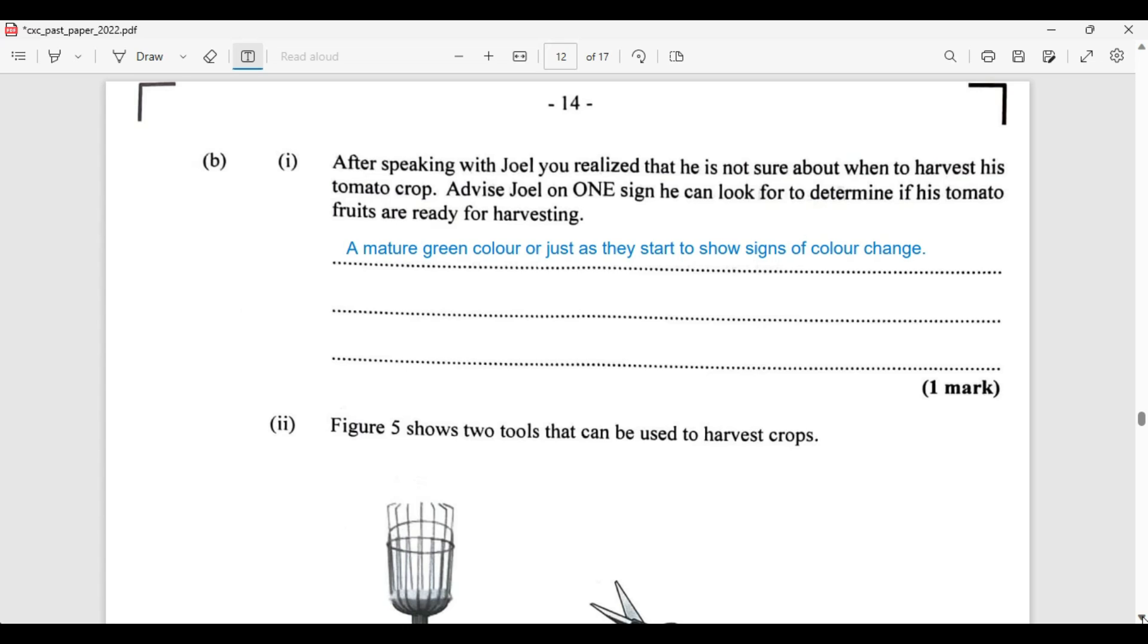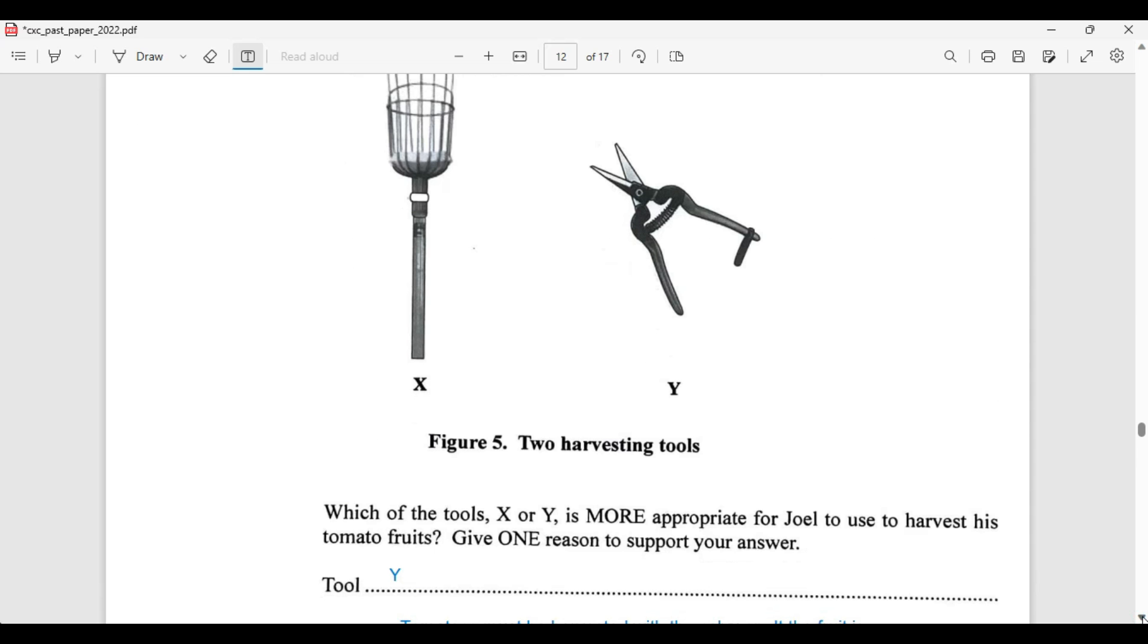Figure 5 shows two tools that can be used to harvest crops. Which of the tools, X or Y, is more appropriate for Joel to use to harvest his tomato crops? Give one reason to support your answer.